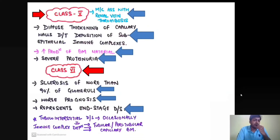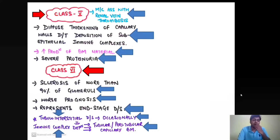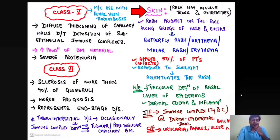All six classes involve the glomerulus of the kidney. In the tubular interstitial space — containing the tubules and interstitium — the disease can rarely present as tubular interstitial disease. Here, immune complex deposition occurs in the tubular or peritubular capillary basement membrane.